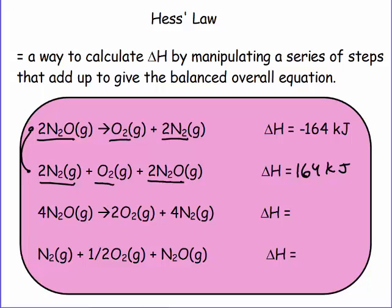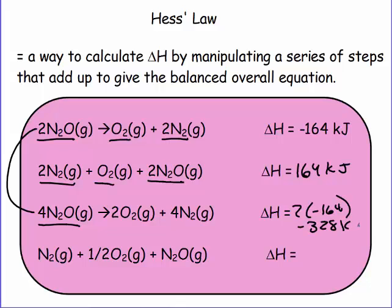Comparing the top reaction with the third reaction, we had two N2O's but now we have four N2O's; one oxygen becomes two oxygens; two nitrogens become four. So what happened was we multiplied the top reaction by two. When you multiply a reaction, you multiply the delta H by that same number. So we get two times negative 164, which gives us negative 328 kilojoules.